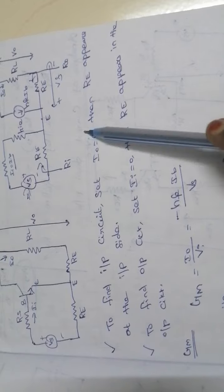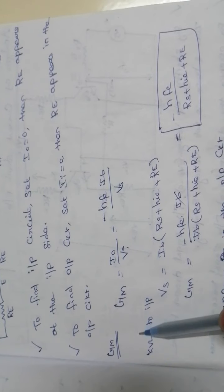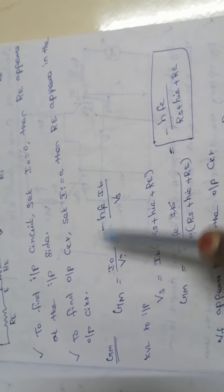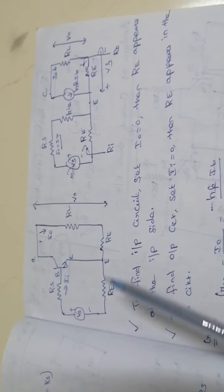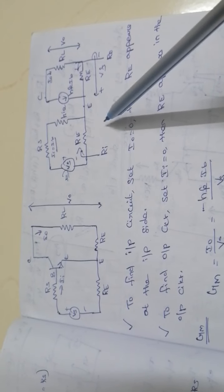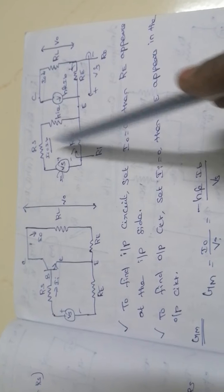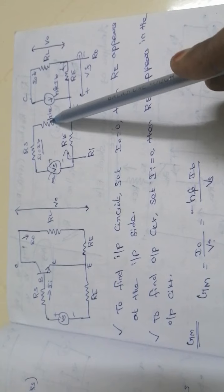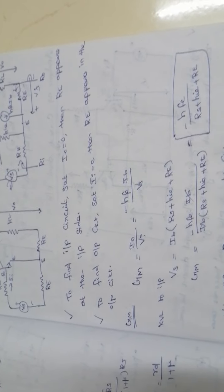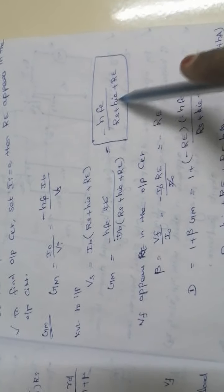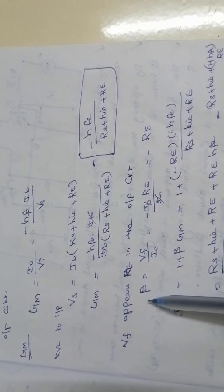First, find Gm. Gm means transconductance gain; the formula is I_out divided by Vi, which we already derived in Electronic Circuits 1. From the given circuit, Vs equals Ib times (Rs + hie + Re). Substituting this Vs value, we get Gm equals minus hfe·Ib divided by Ib, and Ib cancels, giving Gm equals minus hfe divided by (Rs + hie + Re).